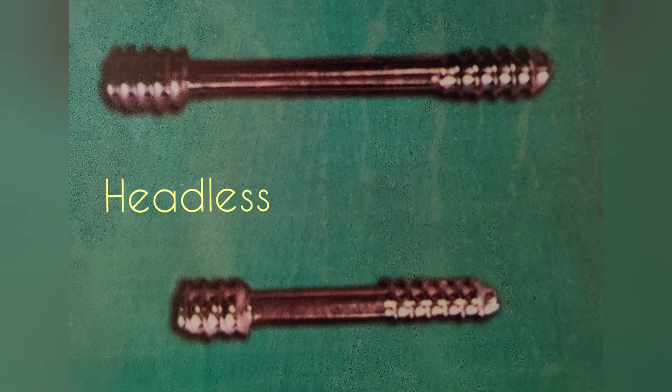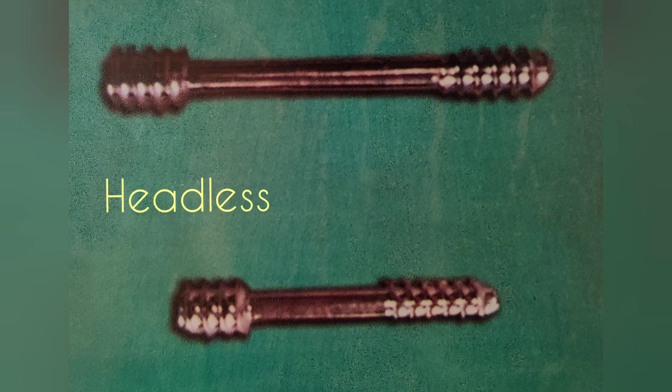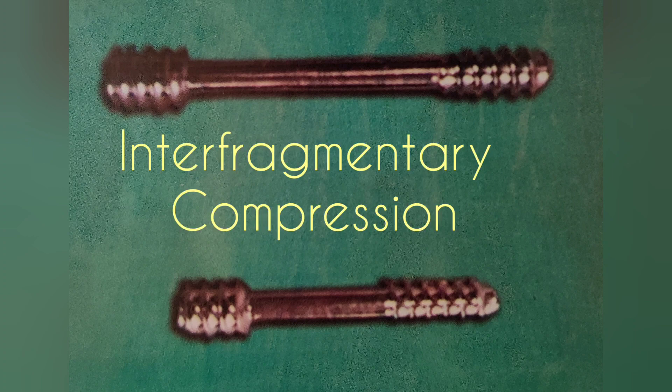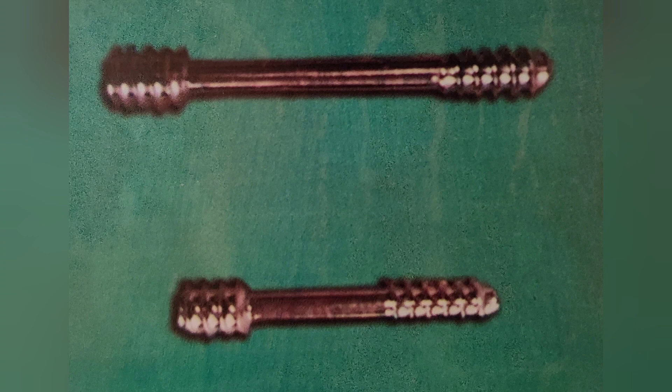Next is Herbert screw. This is a cannulated headless screw. It has a differential pitch between 3 mm to 3.9 mm. It provides interfragmentary compression used for scaphoid fracture, capitellar fracture, radial head fracture, talus fracture, etc.